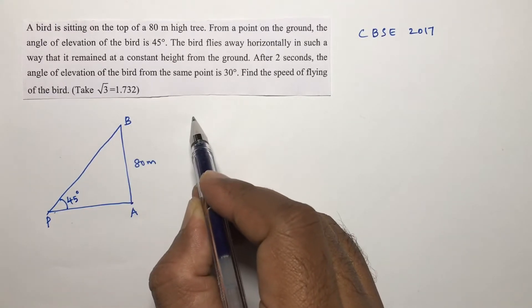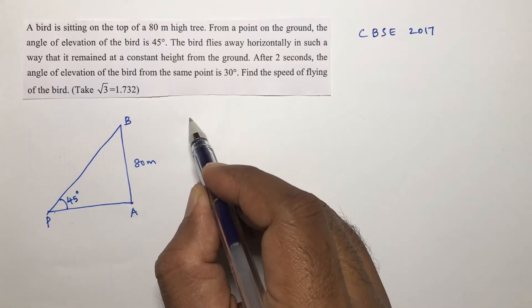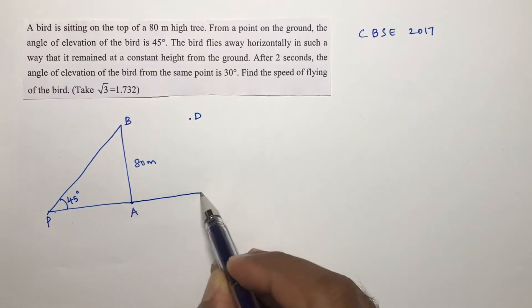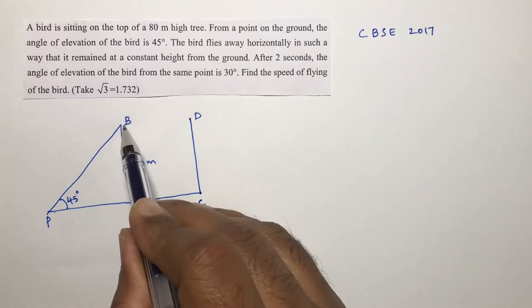So if the bird is moving like this at constant height from the ground, suppose the bird is moving away, it reaches the position like D at a constant height. After a flight of two seconds.